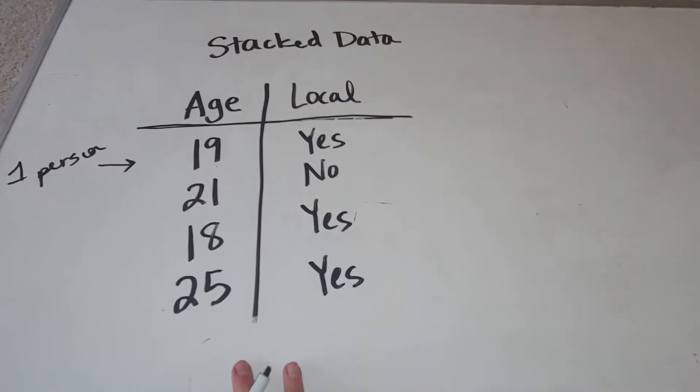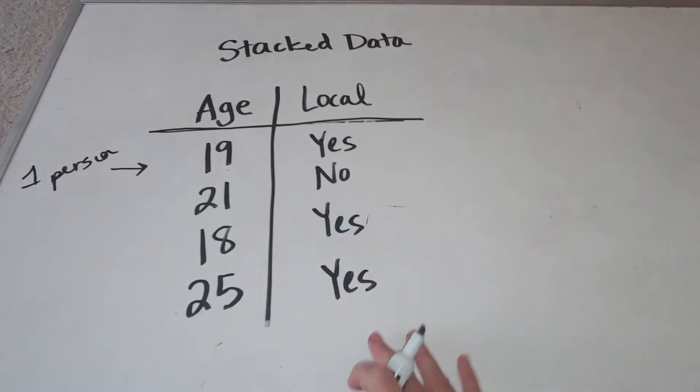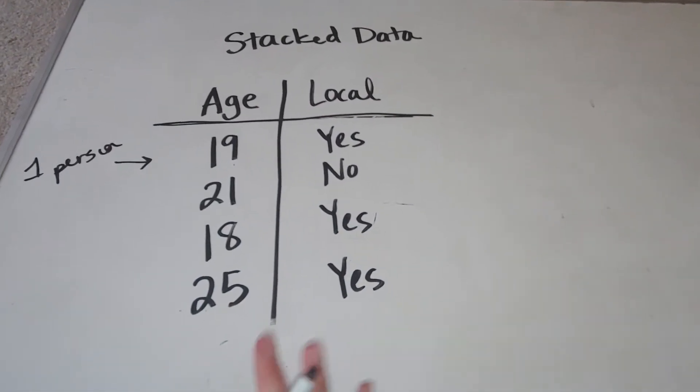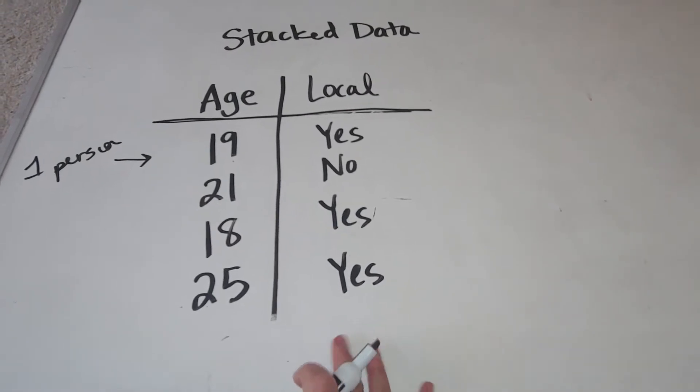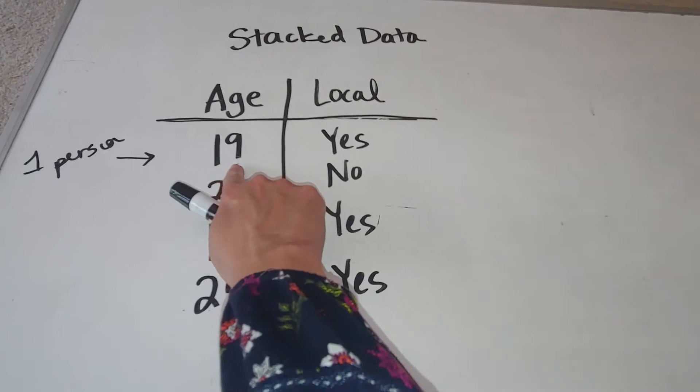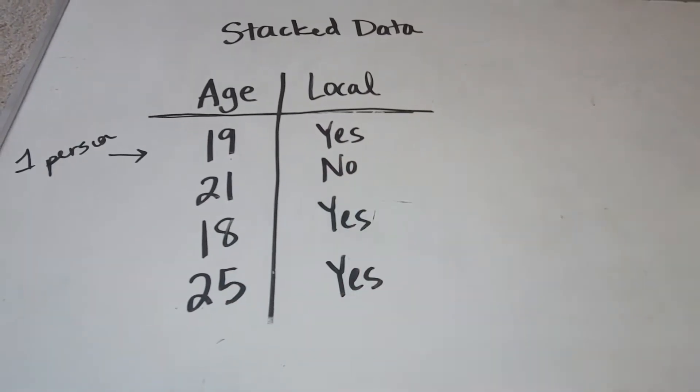As you can see, for those who saw the last video, I've sort of shortened my table. I only have age and whether or not people are local. But that being said, this is still stacked data because each row represents one person. So this is a 19-year-old that is local versus a 21-year-old that is not local.